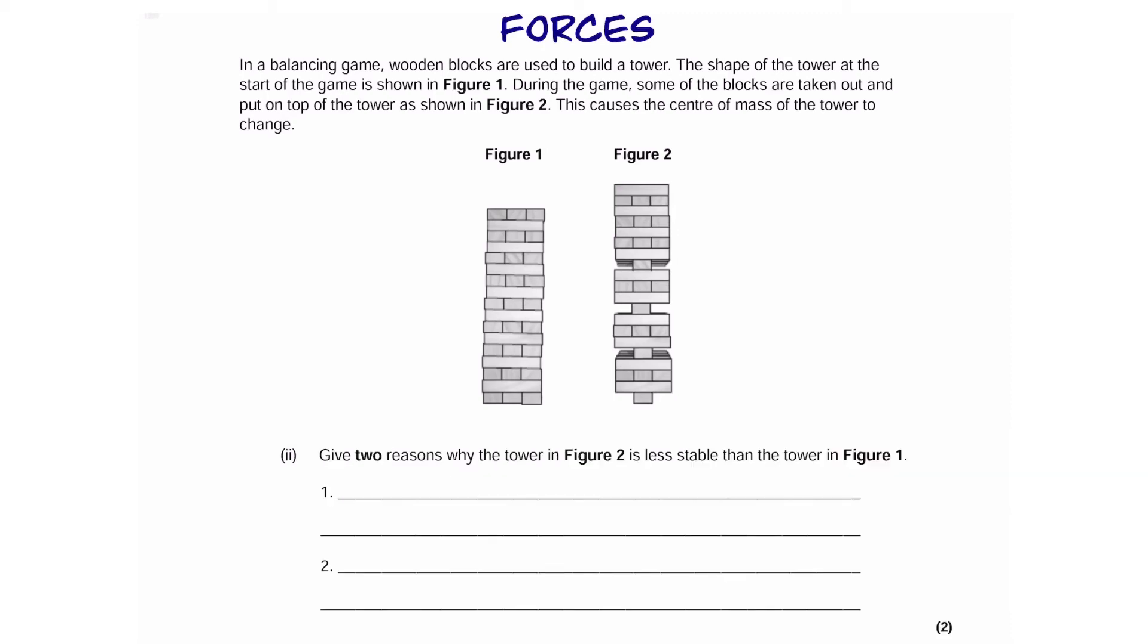So, moving on to the next question. Let's say we have these two towers, and one of them is, of course, more stable. If a wind was to blow, for example, we know which one's more likely to fall over. So, give two reasons why figure 2 is less stable than figure 1.